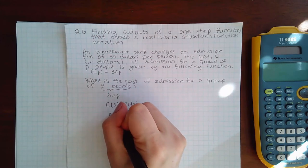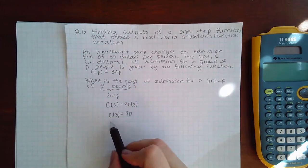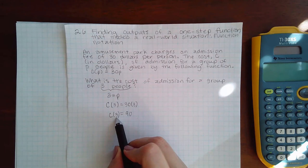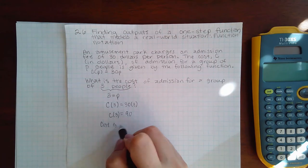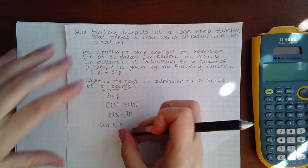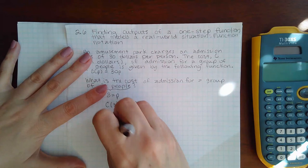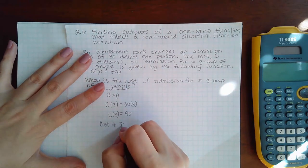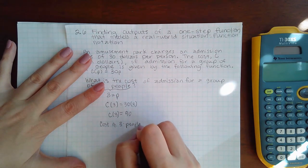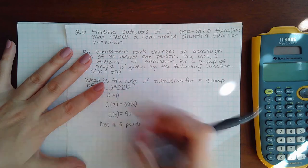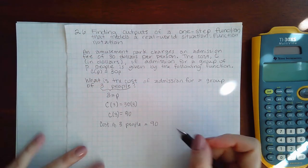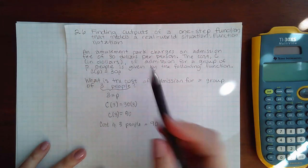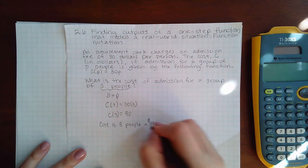this is not C times 3, this is C of 3. This represents the cost of admission, or the cost of three people. What does that equal? That equals 90. The cost is in dollars, which means this is $90.